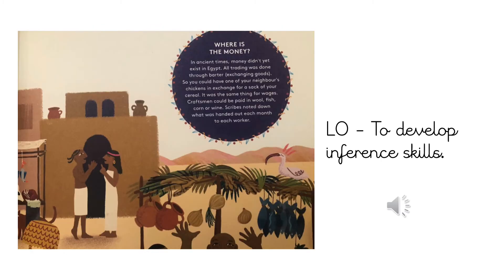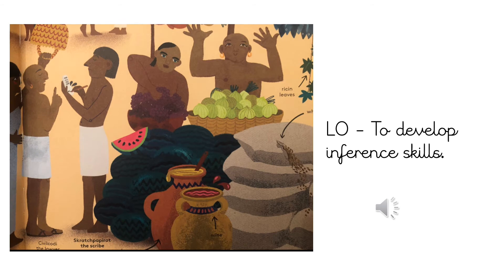Where is the money? In ancient times, money didn't yet exist in Egypt. All trading was done through barter — exchanging goods or things. So you could have one of your neighbor's chickens in exchange for a sack of your cereal. It was the same for wages: craftsmen could be paid in wool, fish, corn, or wine. Scribes noted down what had been handed out each month to each worker. They could also exchange honey, wine, wheat, rice, and leaves, and many more.